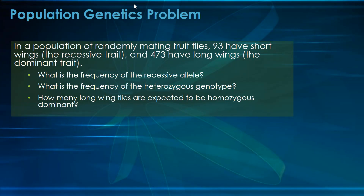Let's do a population genetics problem. We've got a population of randomly mating fruit flies: 93 are short-winged and 473 are long-winged. We need to find the frequency of recessive alleles (q), the frequency of the heterozygous genotype (2pq), and how many individuals are expected to be homozygous dominant (p²).